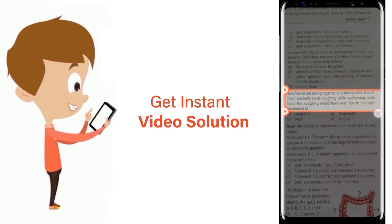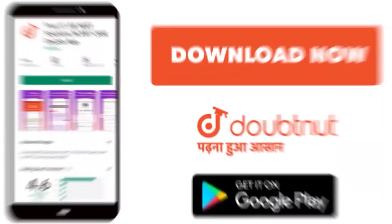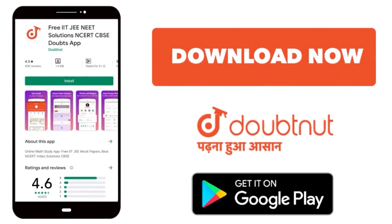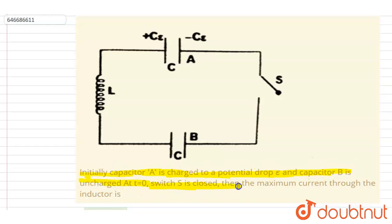Hello everyone. Initially, capacitor A is charged to potential difference E and capacitor B was uncharged. At t equals zero, the switch is closed. Find the maximum current through the inductor.